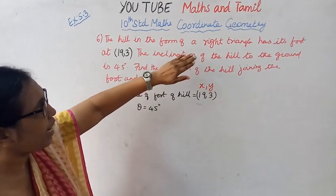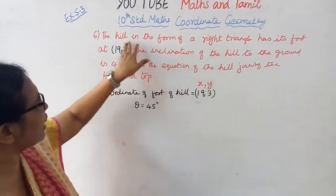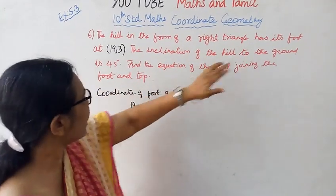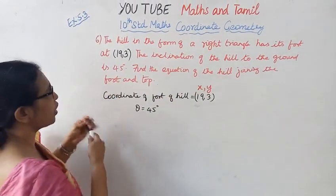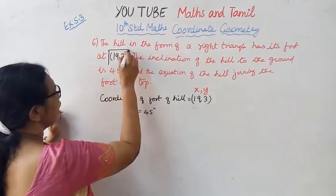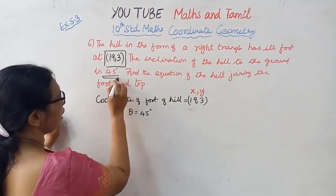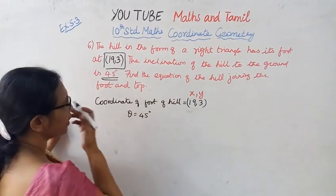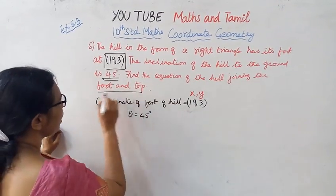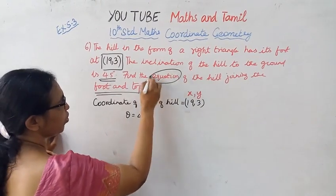The hill in the form of a right triangle has its foot at (19,3). The inclination of the hill to the ground is 45 degrees. Find the equation of the hill joining the foot and the top.